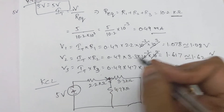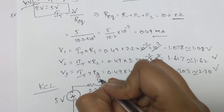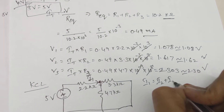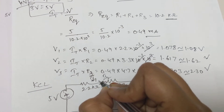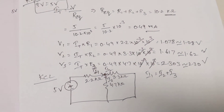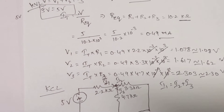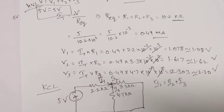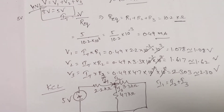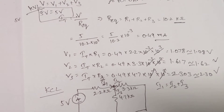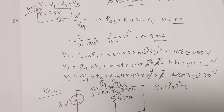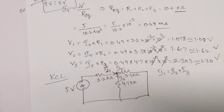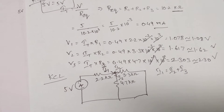As per KCL, at a junction or node, whatever the incoming current towards the node should equal the current leaving through the same node. So if I1 is the incoming current, then I1 should equal I2 plus I3. Equivalently, the algebraic sum of currents at a node is always zero — incoming current is positive and outgoing current is negative.